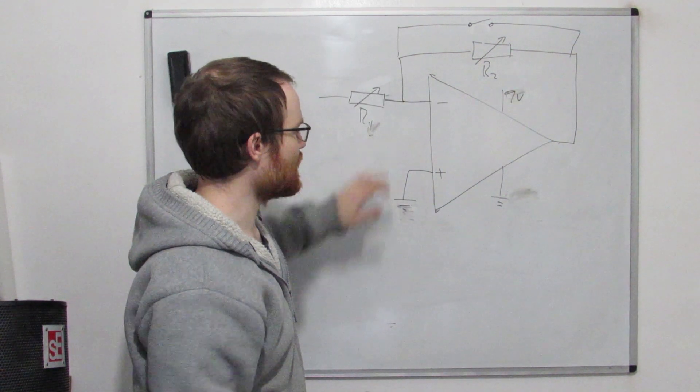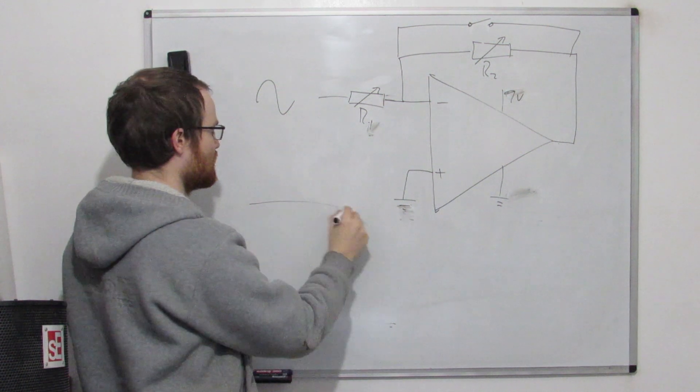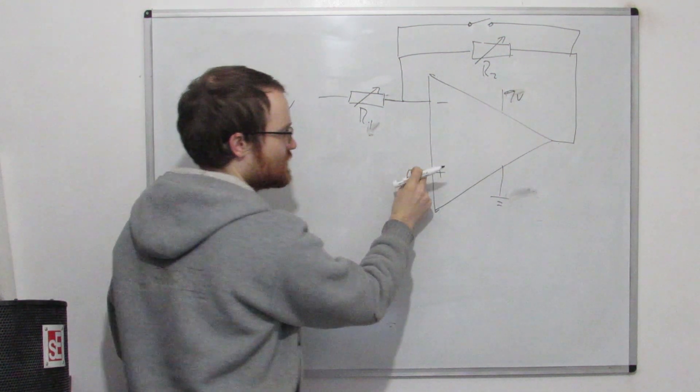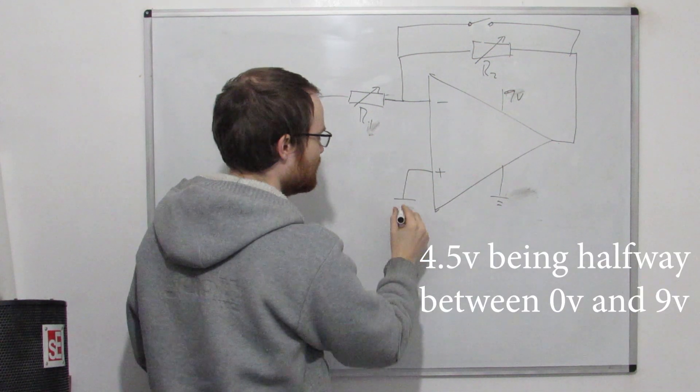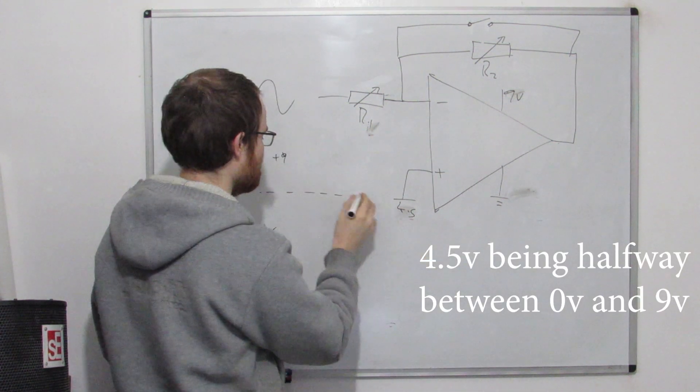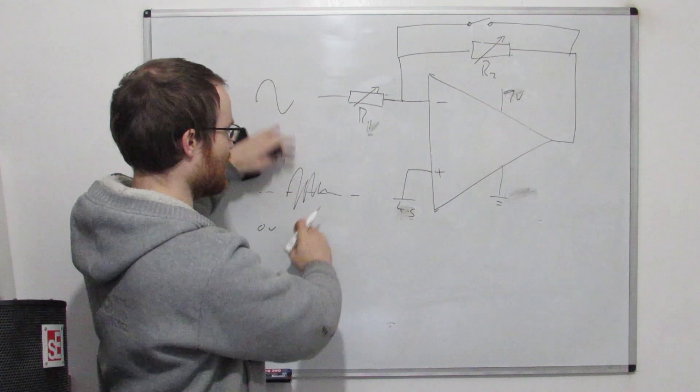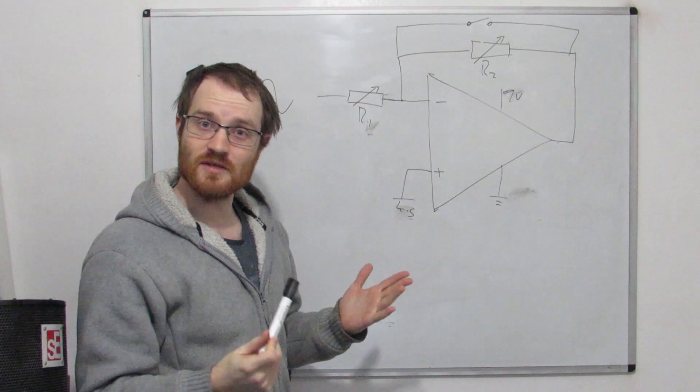So if we connected this to ground as well, our output signal would look like this, because we can't go below ground, so we need to set this point here to four and a half volts. We want our output signal to look like this, to be swinging around the center, so there's no clipping at the top or at the bottom. There's a couple of ways we could do this.